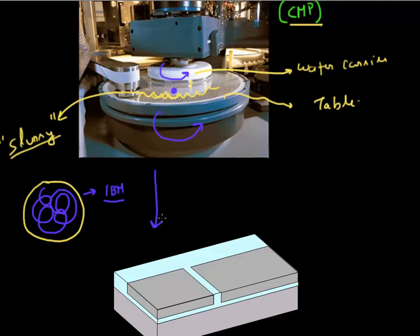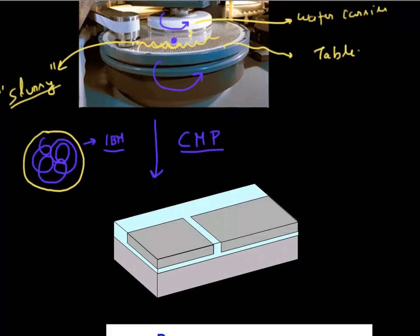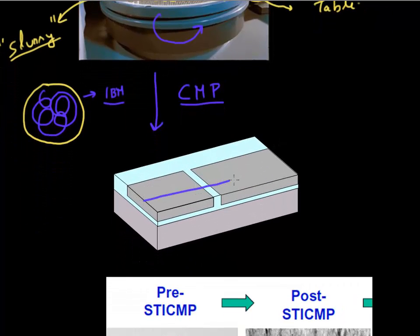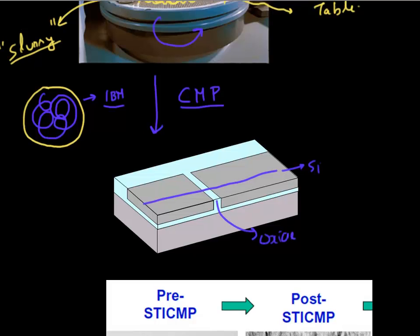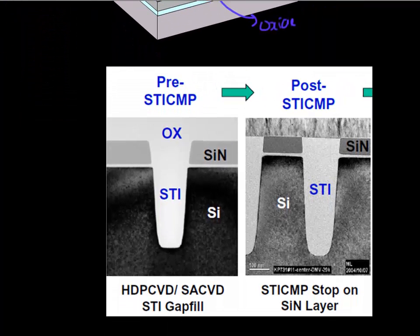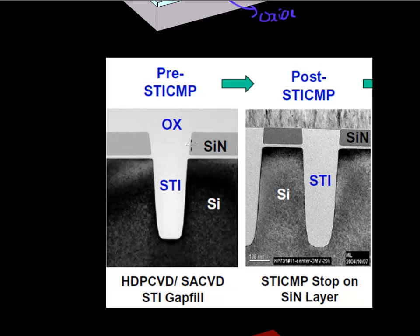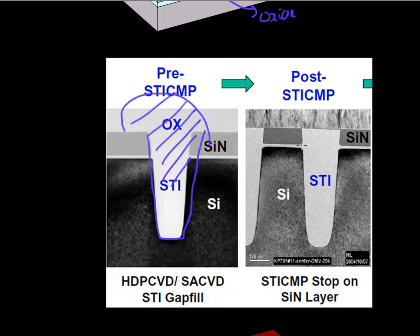After you do your chemical mechanical polishing, you get a very flat surface — this flat surface with your silicon and the oxide filled into the trench. Shown here is a TEM image illustrating this. We started with nitride as the hard mask, etched the STI feature into the silicon, filled it with oxide, and then did a CMP. So you're now back to a flat surface with your oxide filled in this feature.